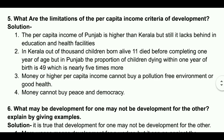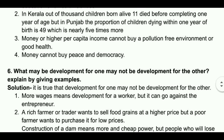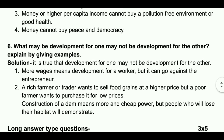Money cannot buy peace and democracy. What may be development for one may not be development for the other — explain by giving examples. Solution: It is true that development for one may not be development for another. More wages means development for a worker but can go against the entrepreneur. A rich farmer wants to sell food grains at a higher price, but a poor farmer wants to purchase them at low prices. Construction of a dam means more and cheap power, but people who lose their habitat will protest.